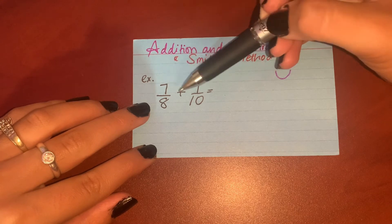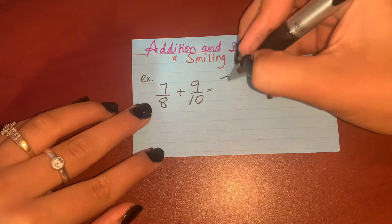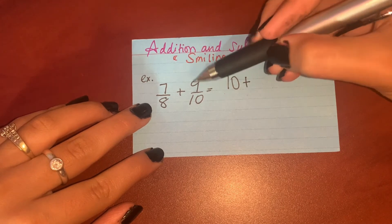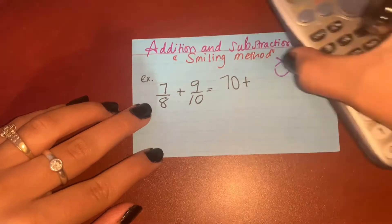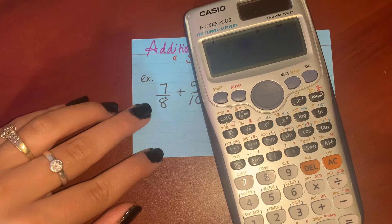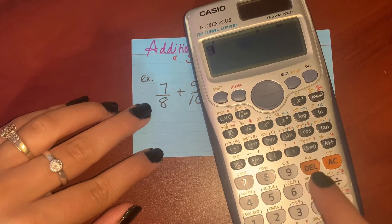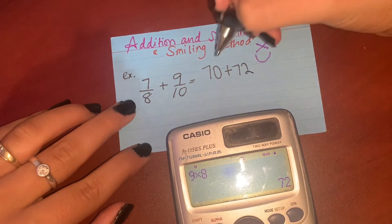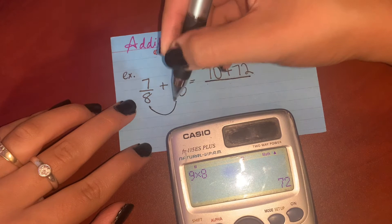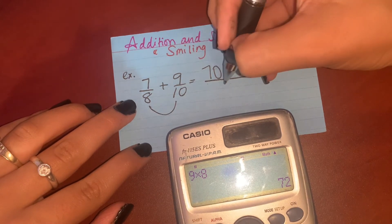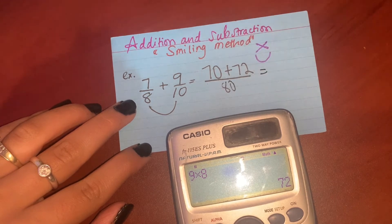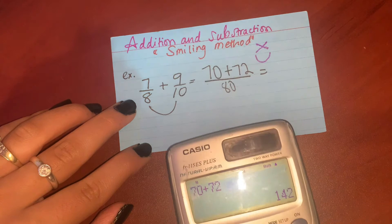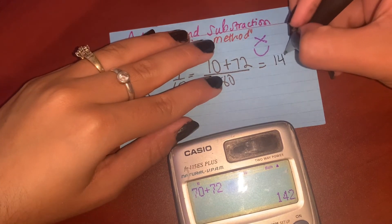So seven multiplied by ten is seventy, then you put the same sign, plus. Nine multiplied by eight—also you will be having a calculator on the screen, so if you're having a hard time, just use a calculator. Nine multiplied by eight is seventy-two, so you put seventy-two here. And then over the multiplication of the denominator, eight multiplied by ten is eighty. Then you say seventy plus seventy-two is one hundred forty-two over eighty.